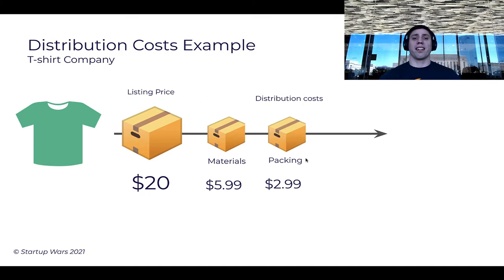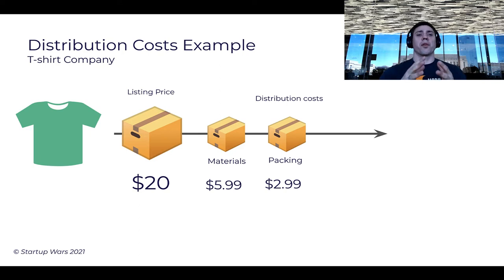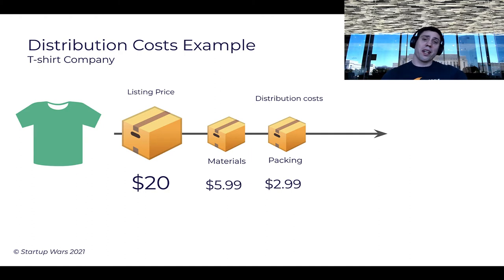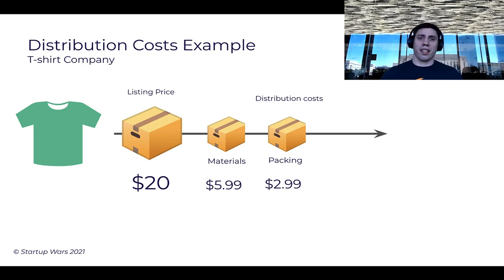But that's not the only distribution cost. There's also going to be the cost of packaging. Let's say a student is purchasing your t-shirt online. Now you have to go back to the drawing board — take the t-shirt, print it, and then pay someone to pack it. Maybe it's you, maybe it's one of your employees, but you're paying them per hour. So that packing cost has a cost associated with it — that's your cost of labor to actually print and pack it.